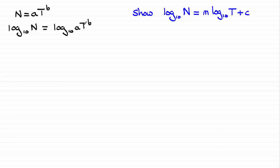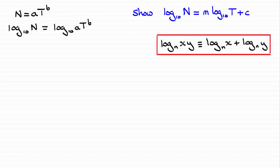Next, I'm going to look at this term here — the a times t to the power b. Remember it's just the t that's raised to the power b, and I'm going to use the addition rule for logs. You should be familiar with it: if you've got the log of two things being multiplied together, say x and y in base n, it's the same as log of x in base n plus the log of y in base n.